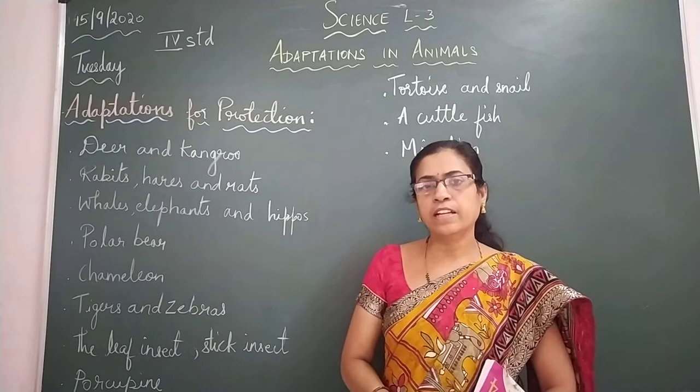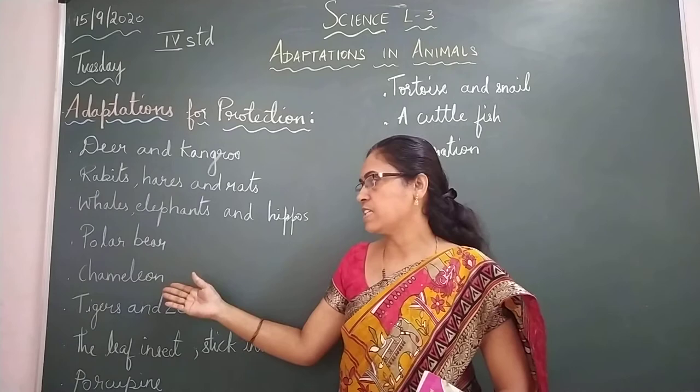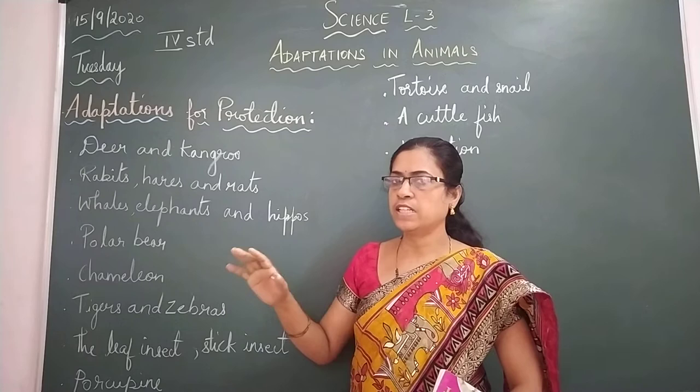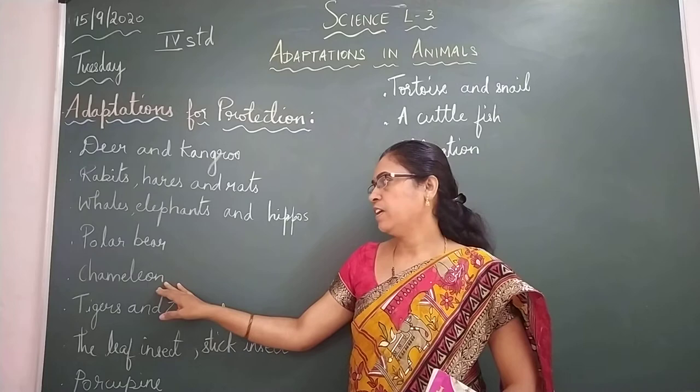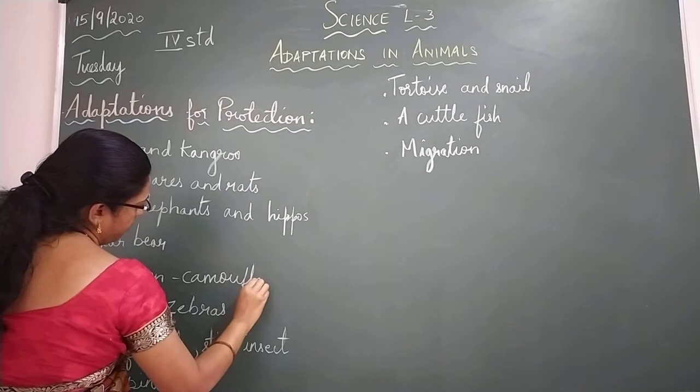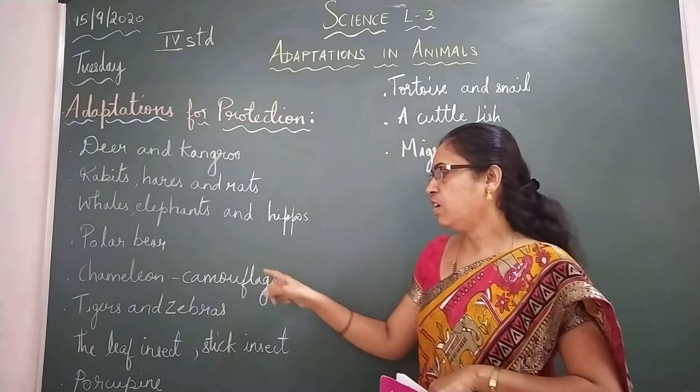Next is the chameleon, also called girgit. The chameleon can change its colour to match its surroundings. This ability to change colour and blend in with the surroundings is called camouflage.